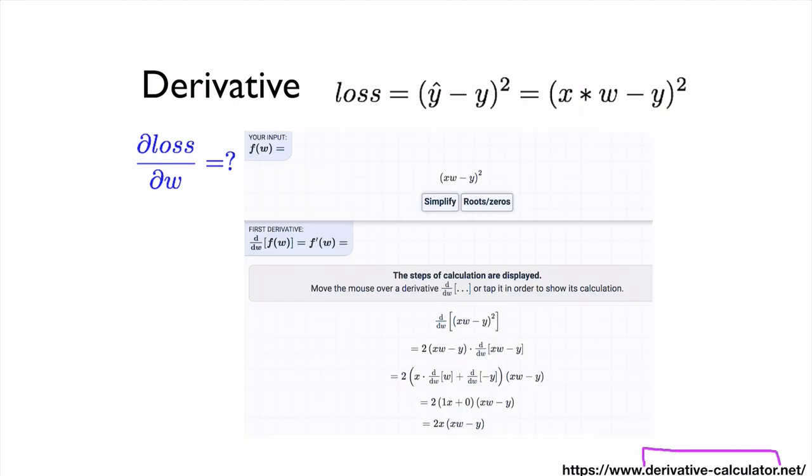For example, you can go to this derivative calculator.net, and just provide your loss function here. And then you want to ask, what is the derivative? And then it will automatically compute and give us the answer, which is 2x times w minus y will be the derivative of this value.